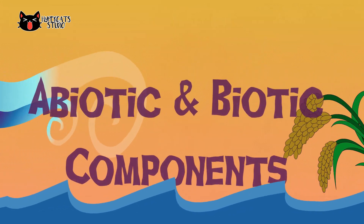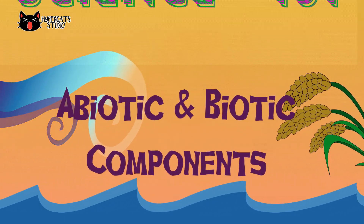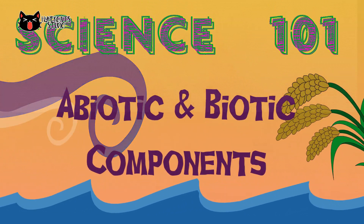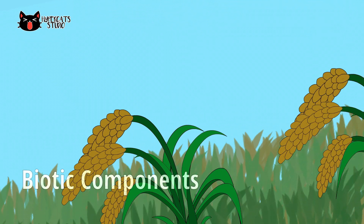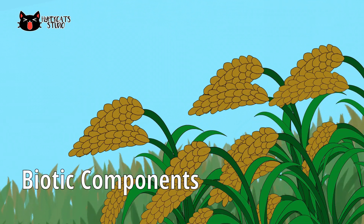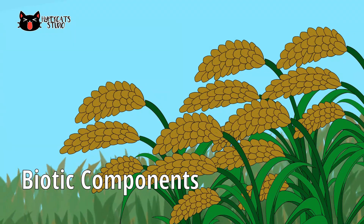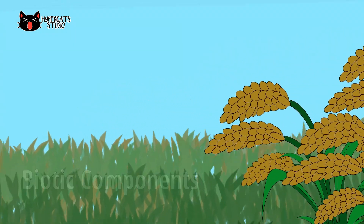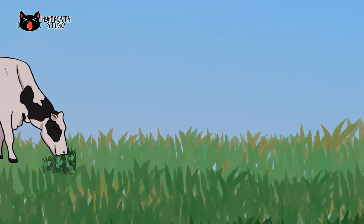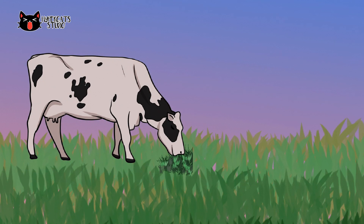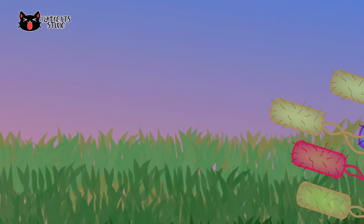Let's discuss the abiotic and biotic components of an ecosystem here on Science 101. Plants, animals, bacteria and other living things that are present in an ecosystem are biotic components. Some of them are producers of food, others are consumers and some are decomposers.